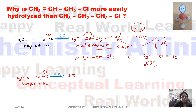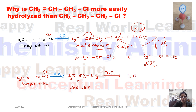When the carbon-chlorine bond breaks in propyl chloride, we get a primary carbocation, but it is unstable because there is no stability factor such as inductive effect or resonance. When it undergoes hydrolysis, we get propyl alcohol as the final product, but the rate of the reaction will be very slow.